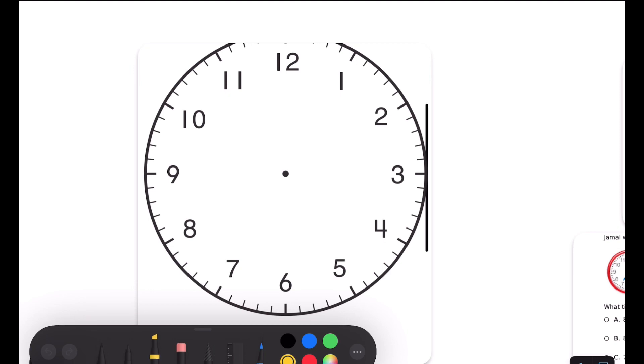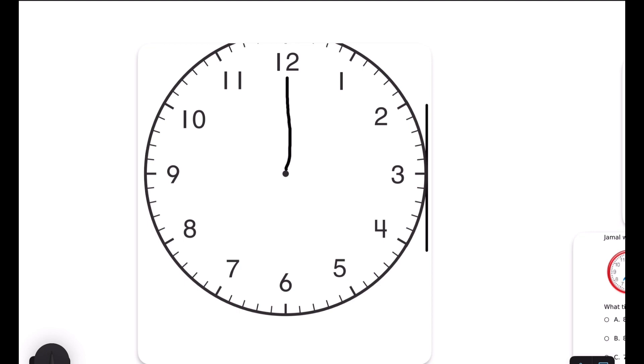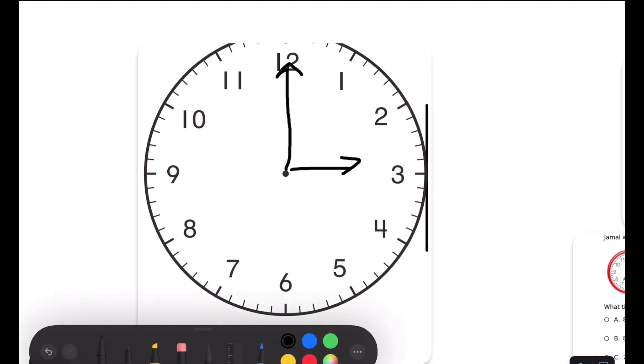However, each number might represent something different when the hand of a clock points. For example, each clock has a long hand and a short hand, and these hands tell time.